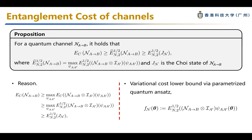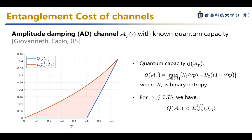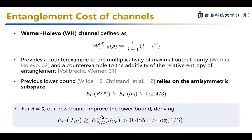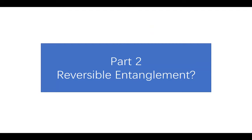Using a variational approach to optimize over pure states, here is one example: the amplitude damping channel. The red line is our lower bound, the blue line is the quantum capacity, illustrating the irreversibility of quantum communication. We also show improvements for the entanglement cost of the Holeveo-Werner channel. Previously the best known results used the antisymmetric subspace, and we can show numerically a lower bound better than log(4/3).